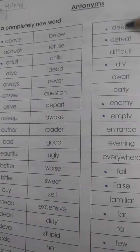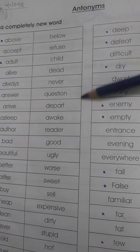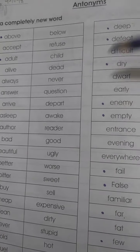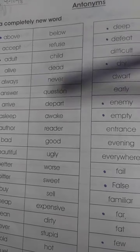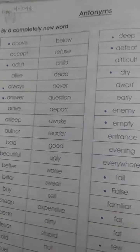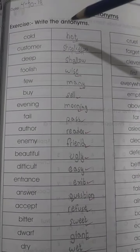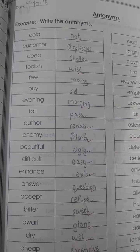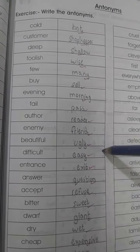So, baat easy hai, yaapko samajh aagya hooga. Now, what you have to do here — you need to look at this page, understand it from the video, and then you are going to learn this page. You have to memorize all the antonyms. And then you are going to switch on to the next page, jis peh exercise hai, which says 'write the antonyms.' Words are given to you mixed, and you have to write their respective antonyms.